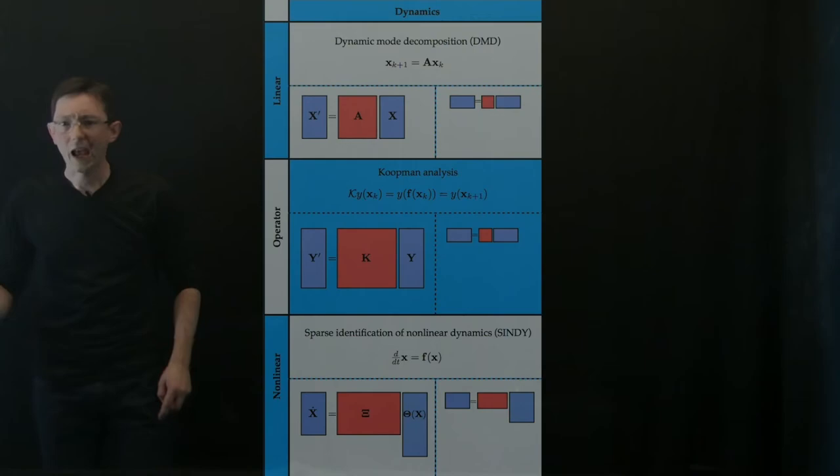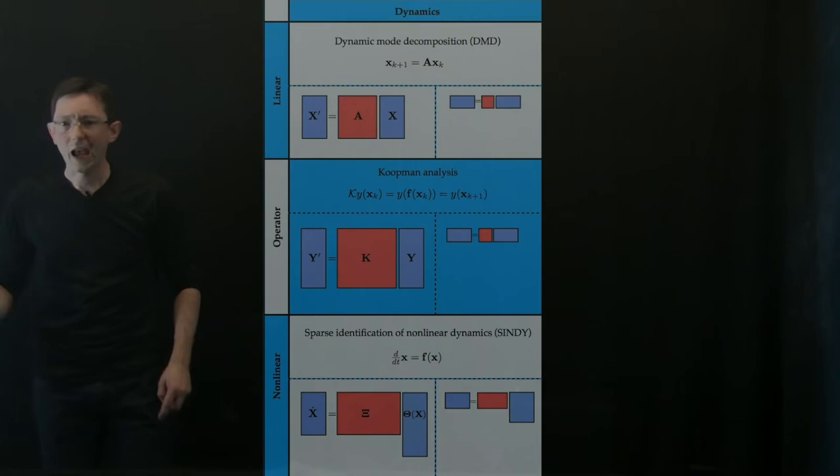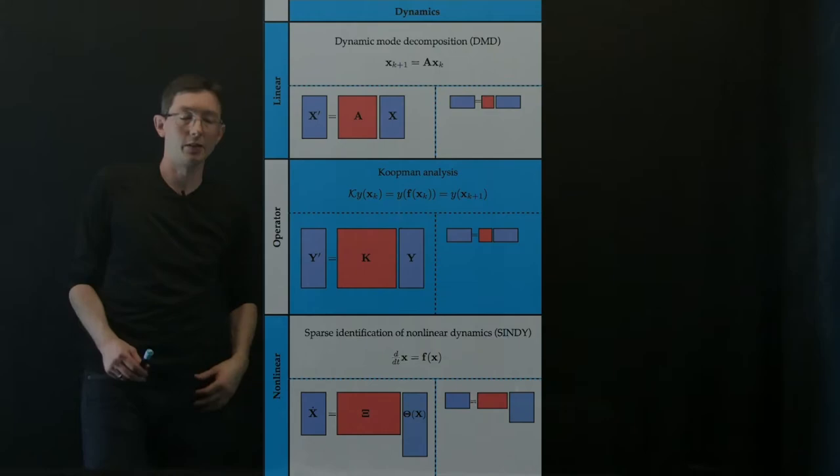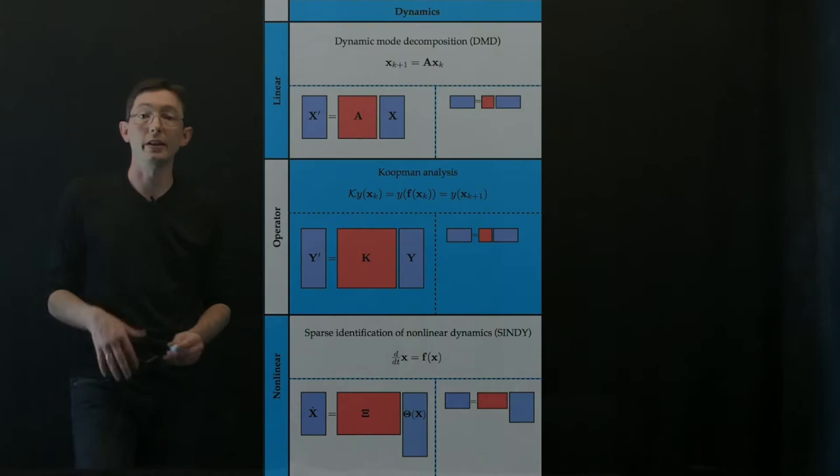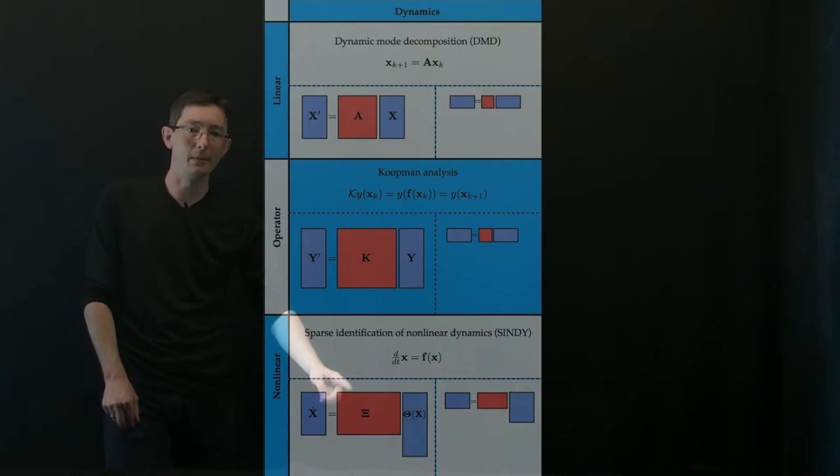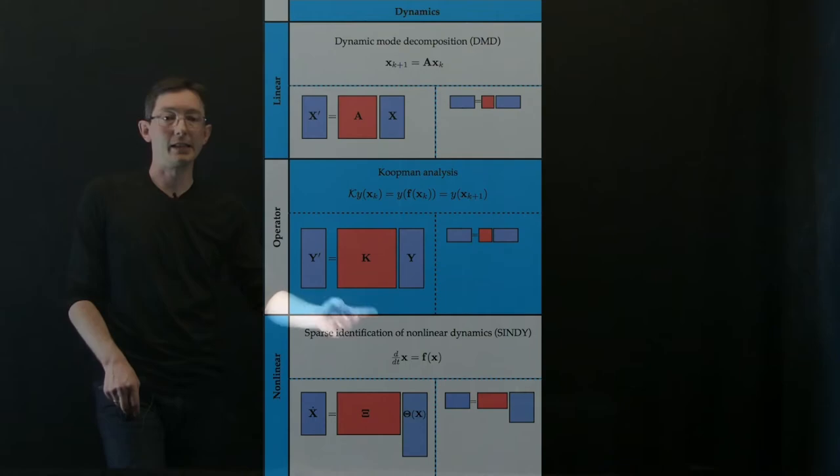And then the third approach for system identification—and notice that there's no control, there's no plus BU in any of these. So I'm just showing you what exists now, and then what we're going to do to extend these to control. So we also have this SINDY, this sparse identification of nonlinear dynamics regression. And so essentially what we do is we build this library of possible right-hand side functions for x dot equals f of x. So we build a library, a nonlinear library, of candidate functions for f of x.